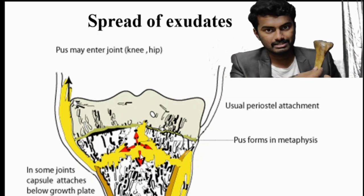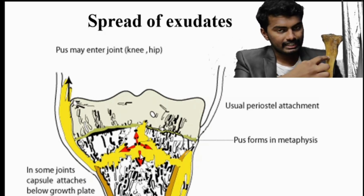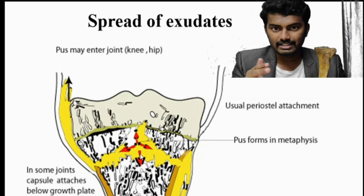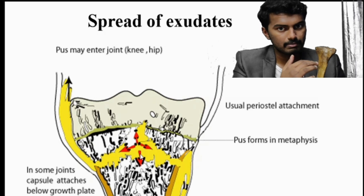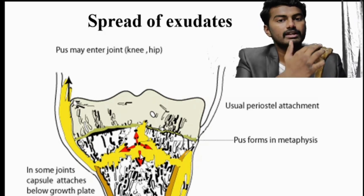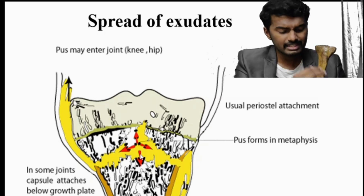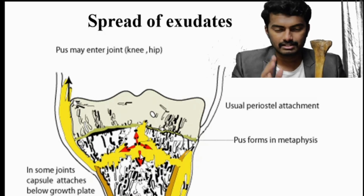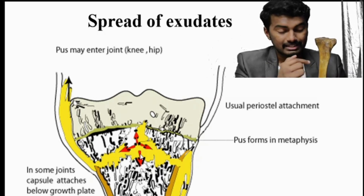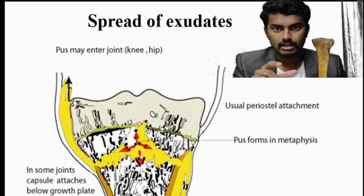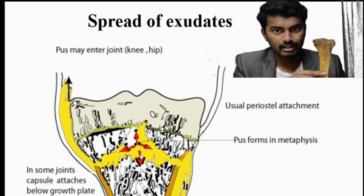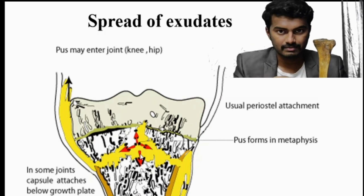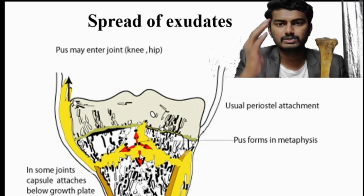The pus has three routes of spread. It can move upward only when the physeal plate is absent — in infants under two years there is no physeal plate, so pus invades the epiphysis and joint. In adolescents, it spreads downward into the diaphysis. Most commonly, pus escapes laterally through Haversian canals — the path of least resistance — from the medullary canal through the cortex to the periosteum. The periosteum, being elastic, tries to seal the pus within.